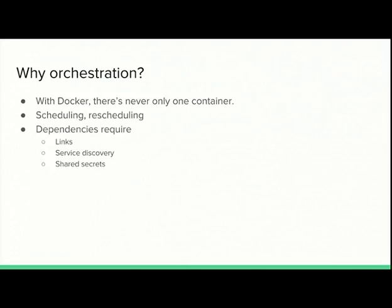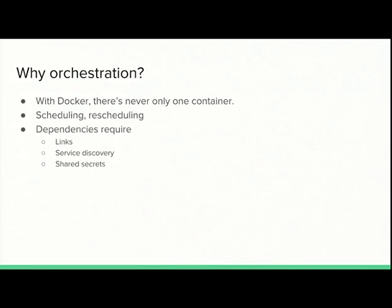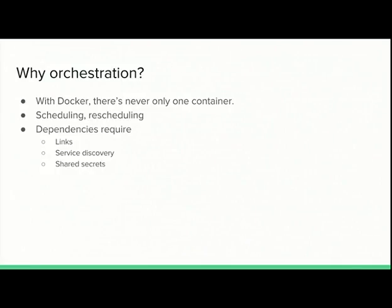Scheduling means picking the right host for each container. You might want to run your database containers on a machine that has SSD drives, is very powerful, has lots of RAM. On the other hand, maybe you'd like to run a file storage container on a machine that has lots of disk space, which would be too expensive built on SSDs. You want that automated, so you can say spin me up a new database container, and the orchestration software already knows to pick a machine with SSD drives or at least five gigabytes of RAM available.